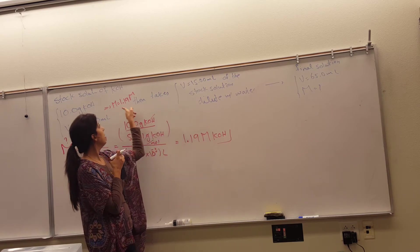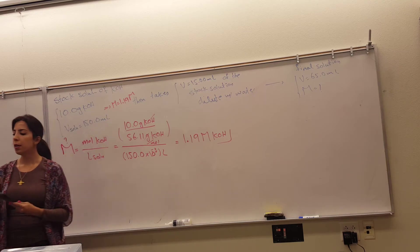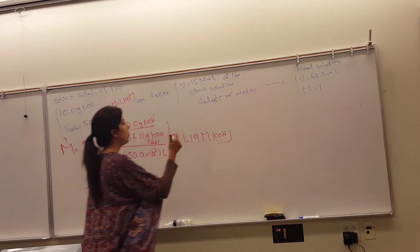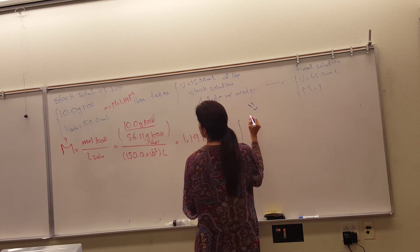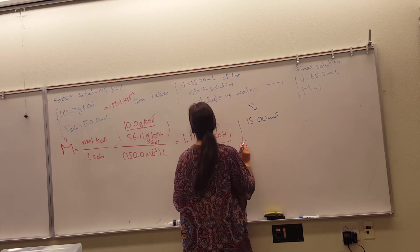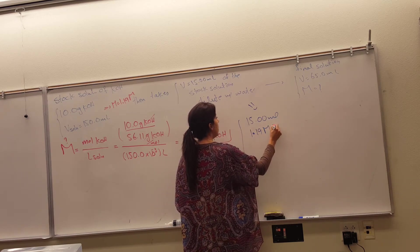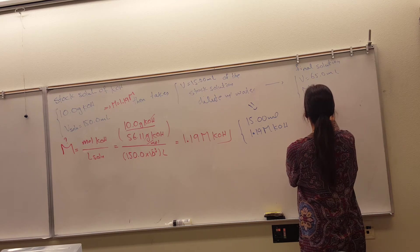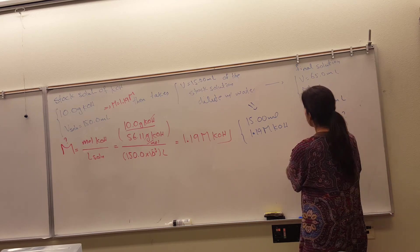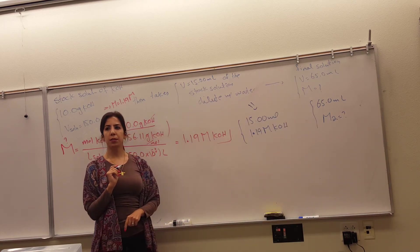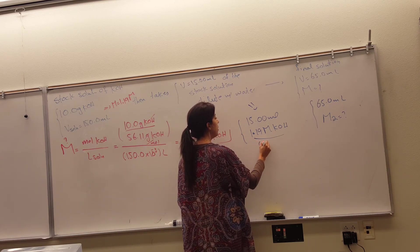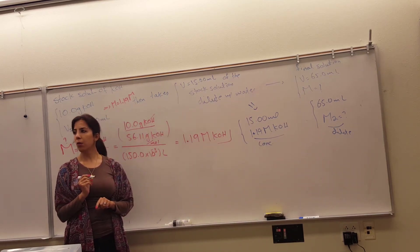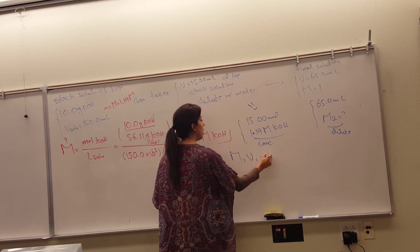Now let's look at the second step. The student takes 15 milliliters of 1.19 molar potassium hydroxide and adds enough water to make a 65 milliliter solution. We want to know what the molarity of this final solution is. The 15 mL portion is your concentrated solution, and the 65 mL result is your dilute solution.